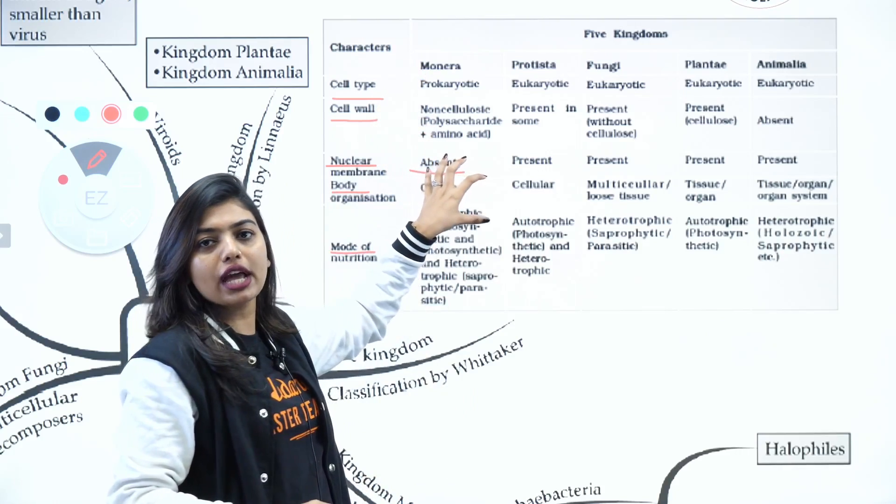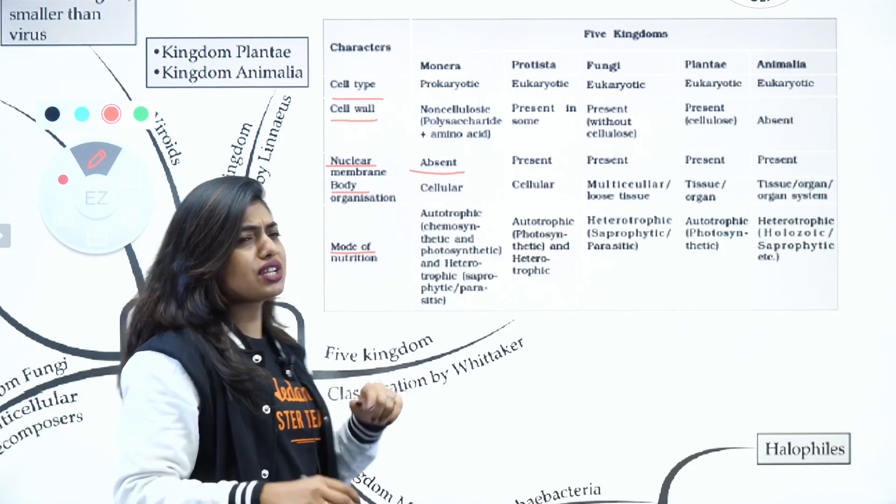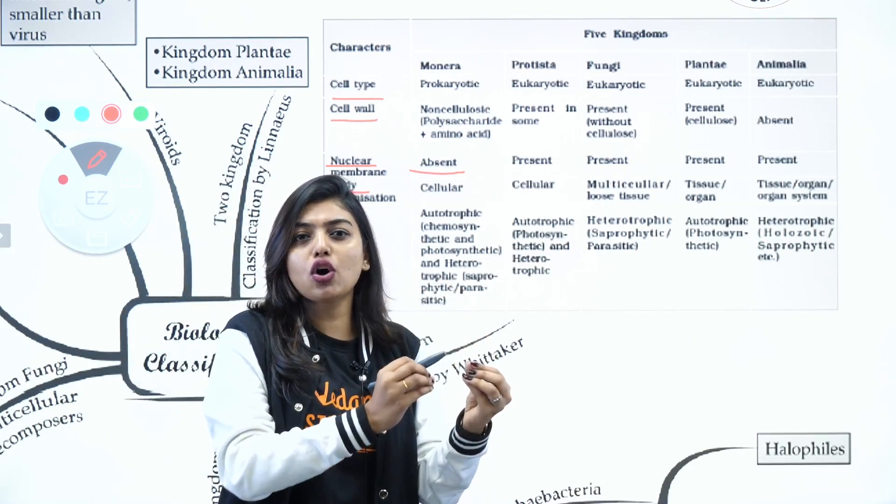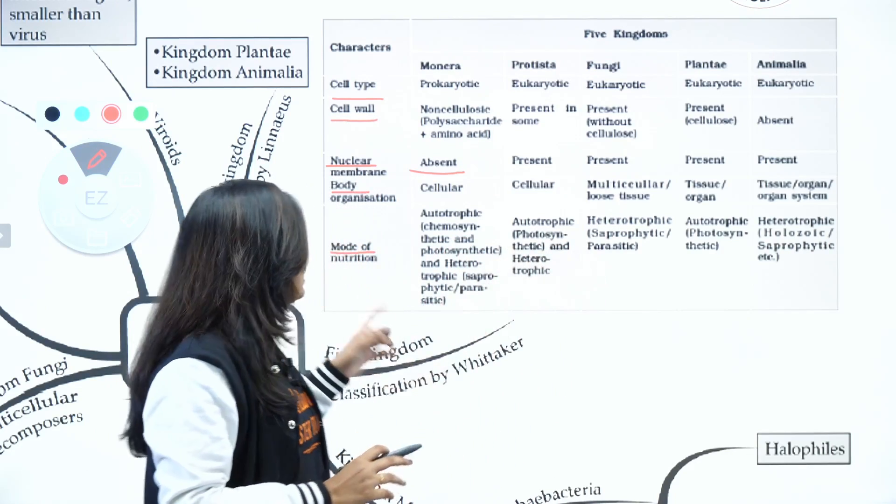When we come to nuclear membrane, we have Monera - nuclear membrane is absent. Present in all others because obviously Monera is prokaryote, so the nuclear membrane will be absent. Then we have body organization, so it started with cellular organization, then going slowly to multicellular loose organization, proper organ system, organ level of organization.